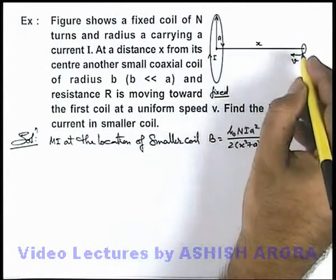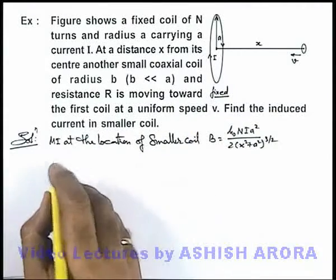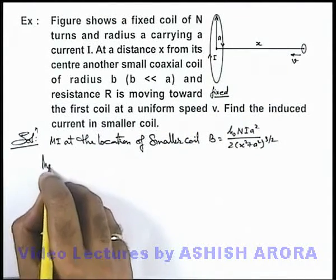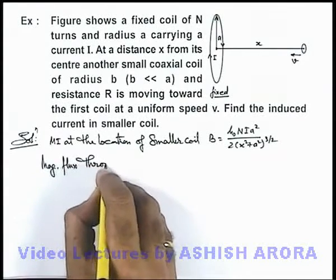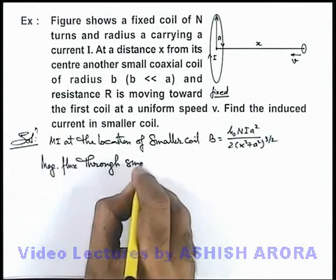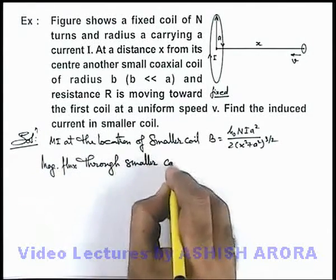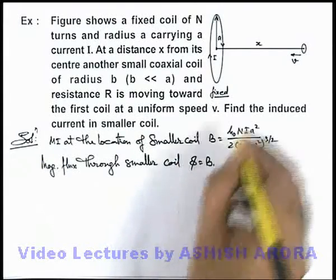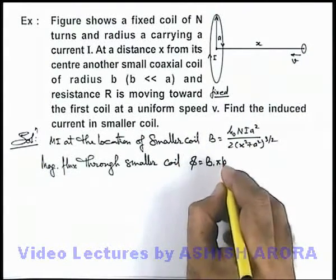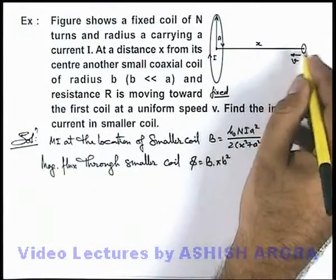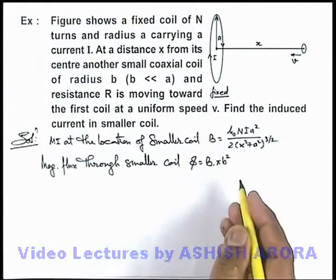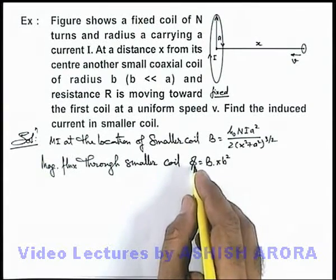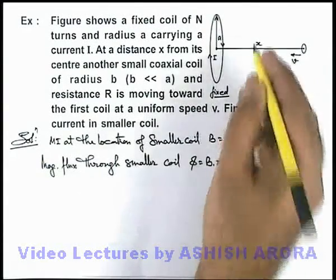If we know the magnetic induction at the location of the smaller coil, we can calculate the magnetic flux through it, which can be written as φ = B multiplied by the area of the coil. As it is a small coil, we can assume that B is uniform, so it is B·πb². If we know the magnetic flux as a function of x,